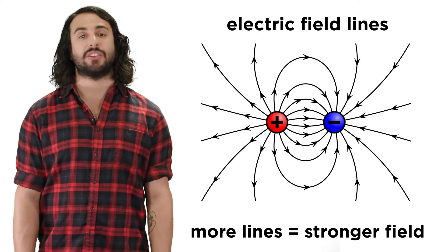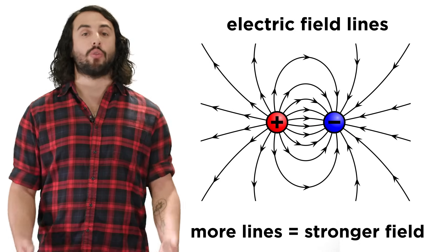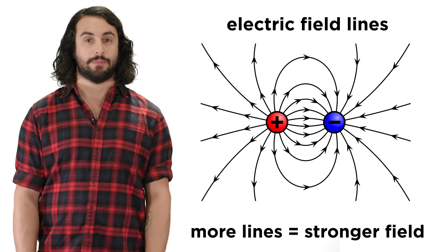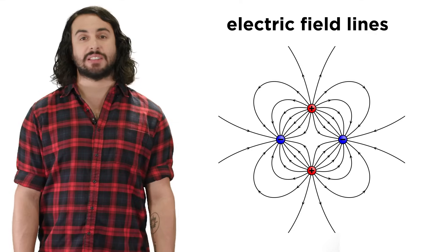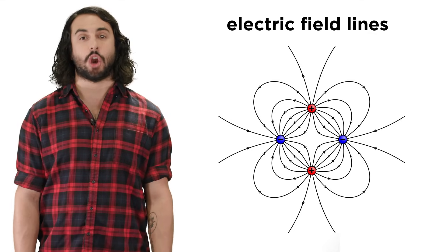The more densely packed the field lines are in a particular region, the greater the strength of the field. Lines like these can be especially useful if many particles are producing the field.